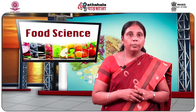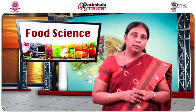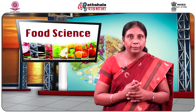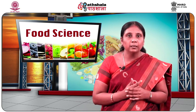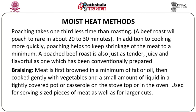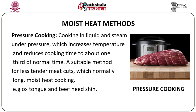Braising is also a moist heat method of cooking meat that combines two or three different cooking methods. Meat is first browned in a minimum of fat or oil and then cooked gently along with vegetables and a small amount of liquid in a tightly covered pot or casserole on the stove top or in the oven. Both serving-sized pieces and larger cuts of meat can be cooked by braising.